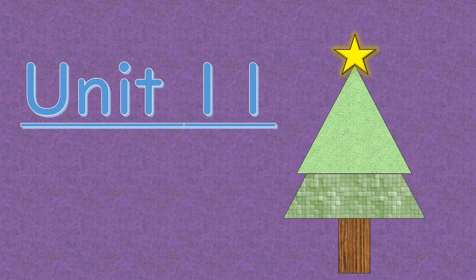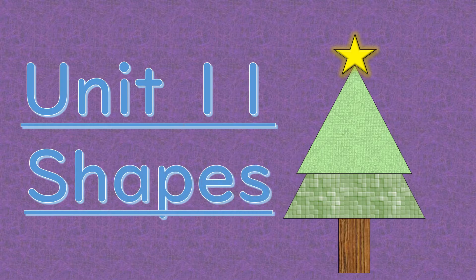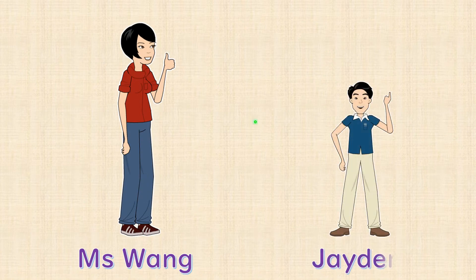Unit 11: Shapes. This is Miss Wang, and this is Jayden. They are looking at shapes on the blackboard.